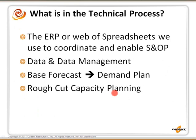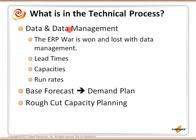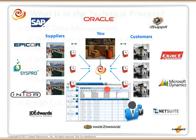What's in the technical process? The ERP or web of spreadsheets we use to coordinate and enable S&OP. Data and data management — the ERP war is won and lost with data management in terms of lead times, capacities, and run rates. The base forecast, which we try to turn into a demand plan, and the rough cut capacity planning are the core technical process components. Also involved are the specific steps you've decided to use, whether you follow Wallace and Stahl exactly or you've created your own version. We're trying to coordinate all of this activity in a monthly operating cycle, coordinated with your IT systems — ERP, legacy, whatever.